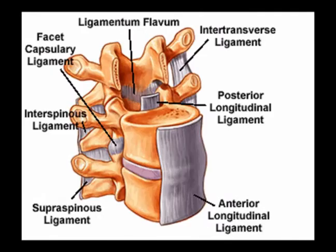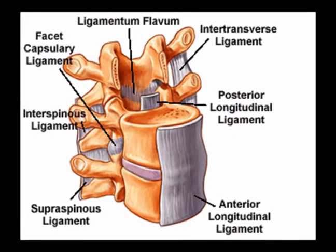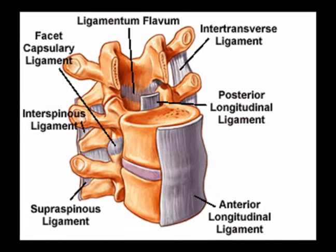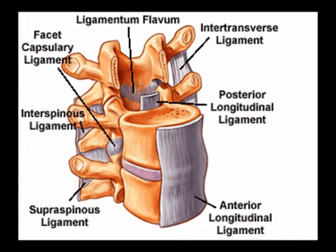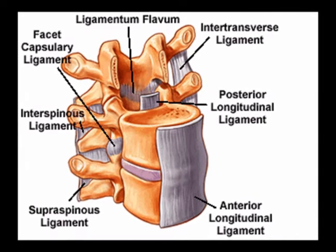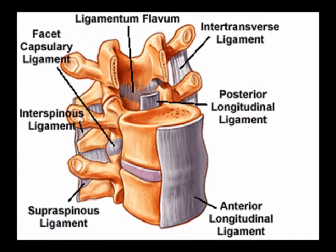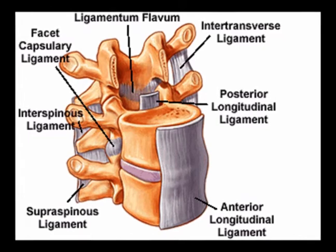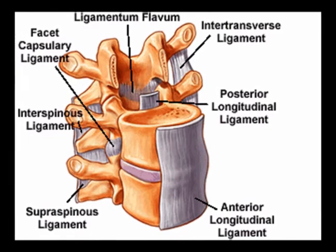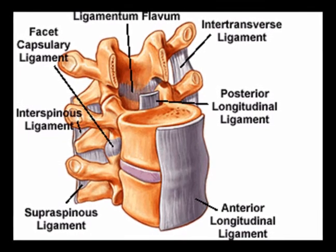It provides stability to the entire vertebral column along with the anterior longitudinal ligament and with the ligamentum flavum. The anterior longitudinal ligament prevents hyperextension, while the posterior longitudinal ligament and the ligamentum flavum prevent hyperflexion.